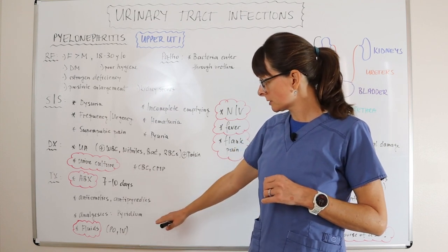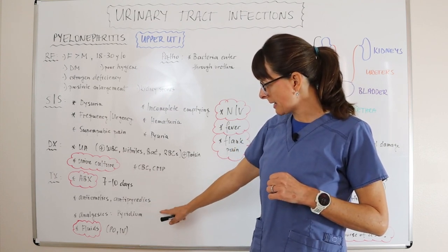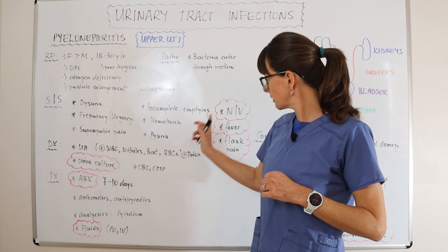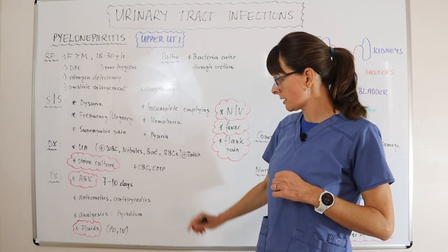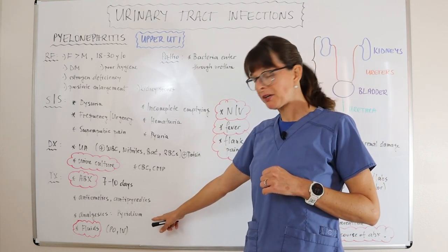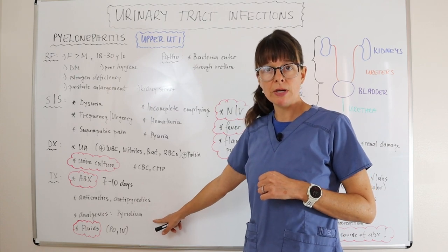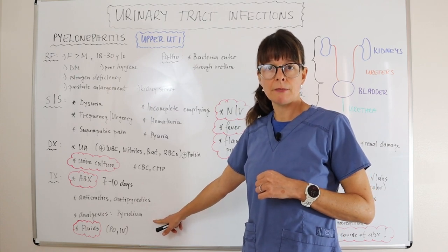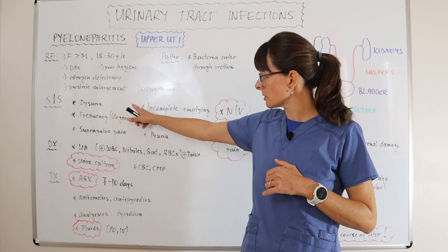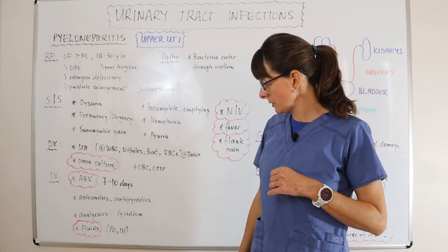Other treatments include anti-emetics and anti-pyretics to treat the fever, nausea, and vomiting. Analgesics for the bladder — specifically pyridium — are very helpful, as it soothes the symptoms of dysuria, urgency, and frequency.